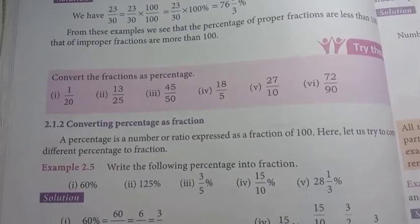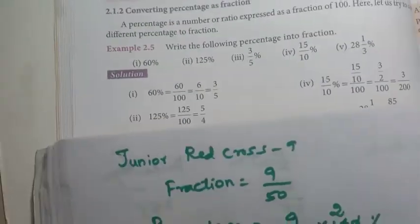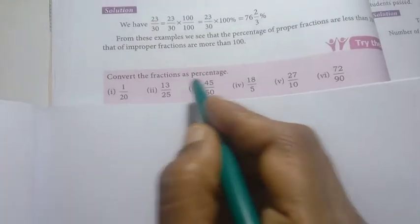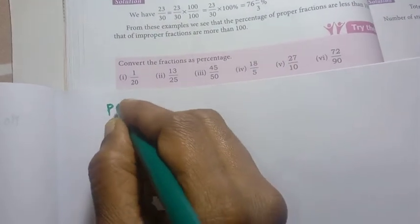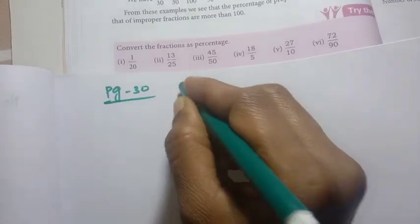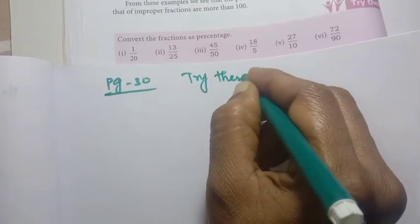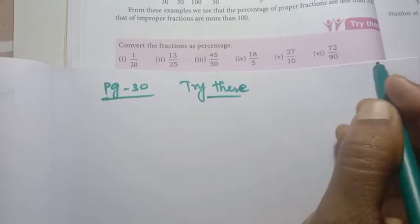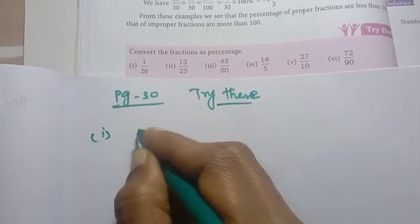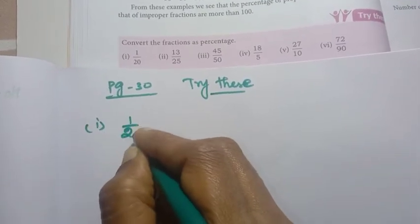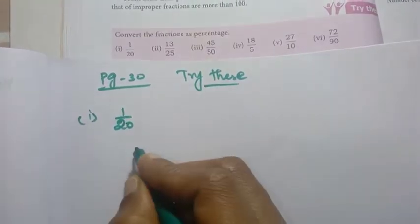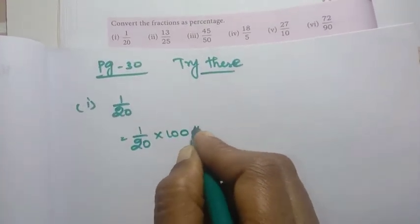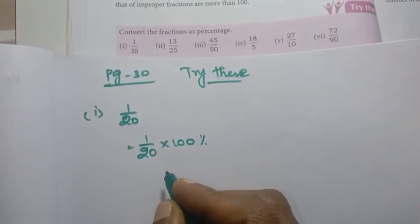Page number 30, try these: convert the fractions into percentage. First: 1 by 20. Percentage = 1 by 20 into 100. Cancel zeros: 2 fives are 10, so equal to 5 percentage.